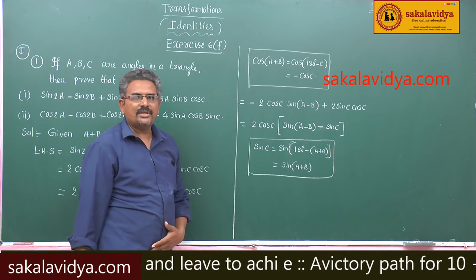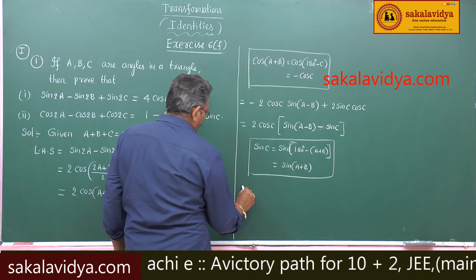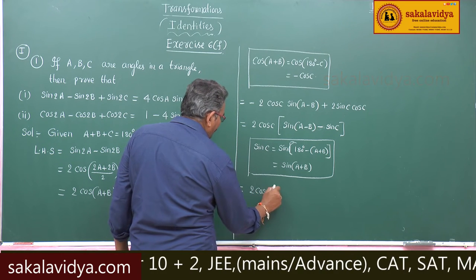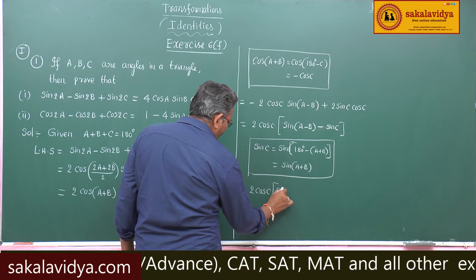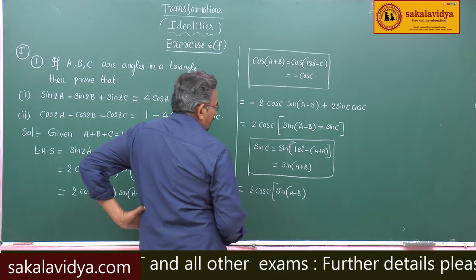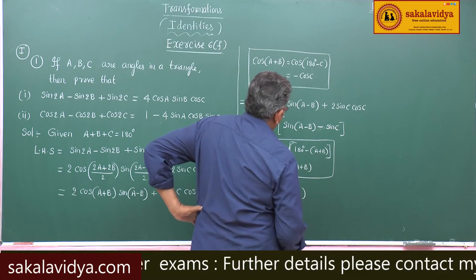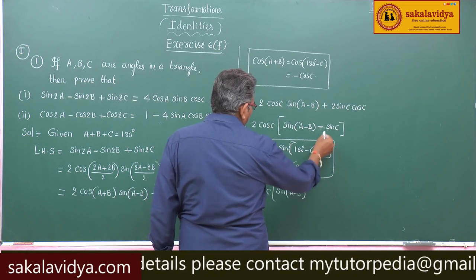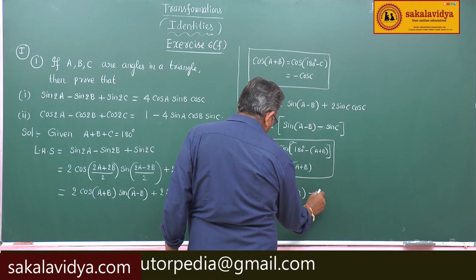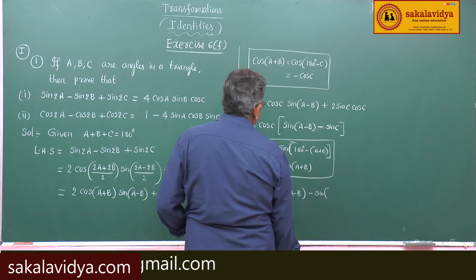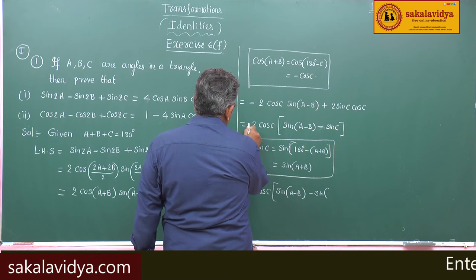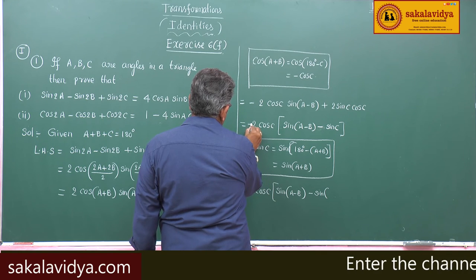So this is equal to 2 cos C into sin of A minus B, sin of A plus B, sin of A minus B, this is minus sin of A plus B.